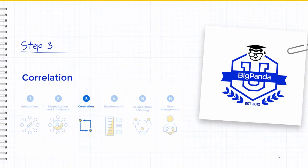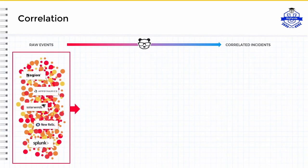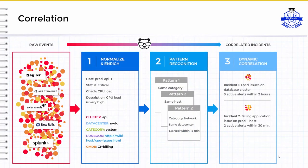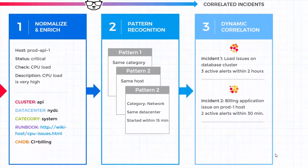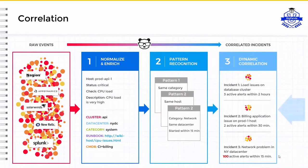The third step we'll discuss is correlation. Correlation is a method of grouping related alerts into a single, high-level incident. After the monitoring alert data is collected, normalized, and enriched, BigPanda uses pattern recognition and dynamic clustering to automatically process the alerts into meaningful, actionable incidents. BigPanda provides suggested correlation patterns as well as the option to customize patterns for optimal noise suppression tailored specifically to your organization. As new alerts are received, BigPanda evaluates all matching patterns and determines whether to create a new incident or update an existing incident. With this powerful algorithm, BigPanda can dramatically reduce your monitoring noise by 90% to 99% in most environments.